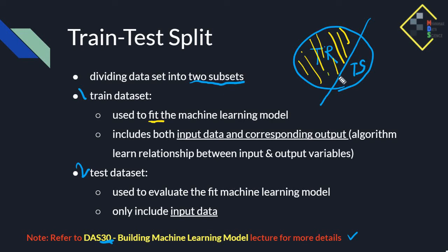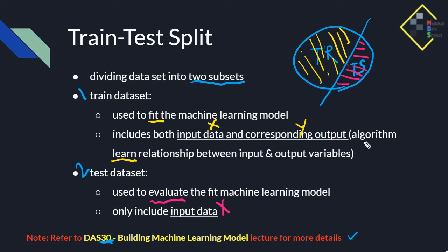Model fit: input corresponding to output y, algorithm, relationship. We have to test the model. This is the test dataset: input from the model and output from the algorithm, for both train data and test data.